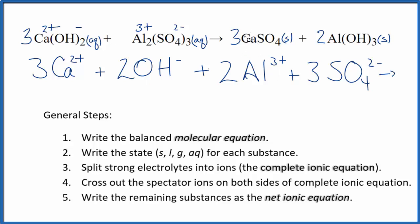For the products, when we do net ionic equations, we don't split solids apart. So we're going to have three CaSO4. Then we'll have the two aluminum hydroxide, Al(OH)3. These are the products in our net ionic equation.